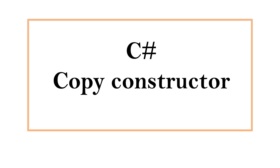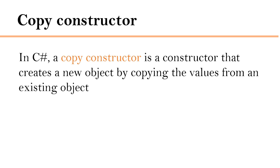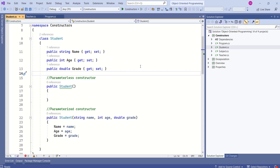Hi, this is Sahana. In this video we are going to understand copy constructors. In C#, a copy constructor is a constructor that creates a new object by copying the values from an existing object. We have already discussed different types of constructors — if you want to watch related videos, please check the description.